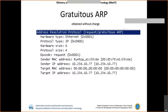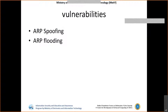Gratuitous ARP is used in specific solutions like finding out IP conflicts, where a particular system can be identified with an already existing IP. However, we need to be very careful in monitoring, because if there are more and more gratuitous ARPs in a particular network traffic, then attackers might also be using these packets to change the behavior in the ARP scenario.